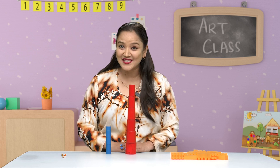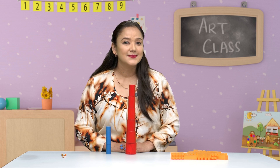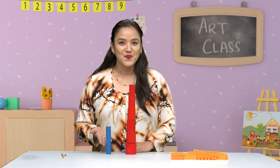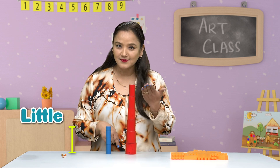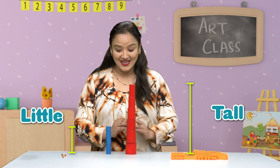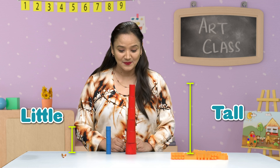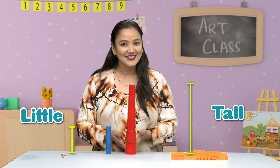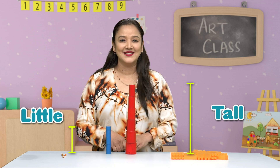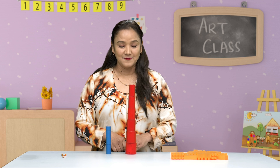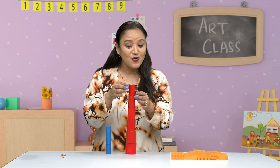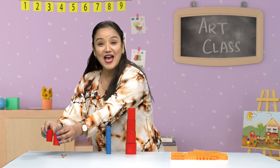The blue one — that's right, little! Tall. Very good. Let's say one more time: tall tower, little tower. Very good! Thank you for helping me out. Let's do more activities — are you ready? Before that, I will get this here.